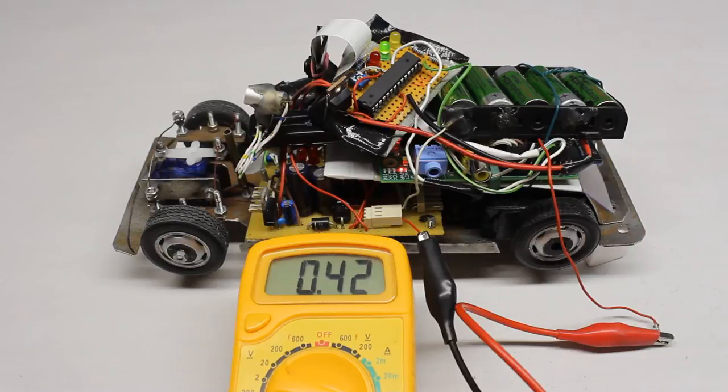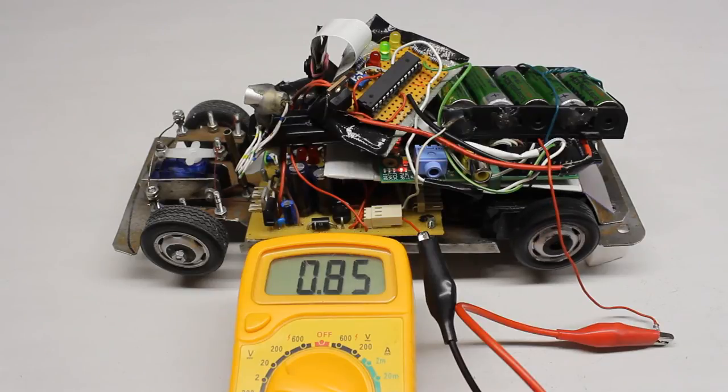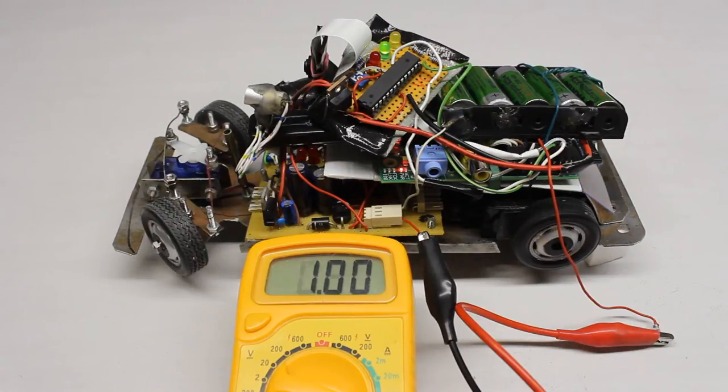Again, a voltage regulator has to be inserted between battery pack and rover electronics. The current drawn by the vehicle ranges from 400mA to 1A, thus the battery pack can supply the robot with electric power for approximately 2 hours.